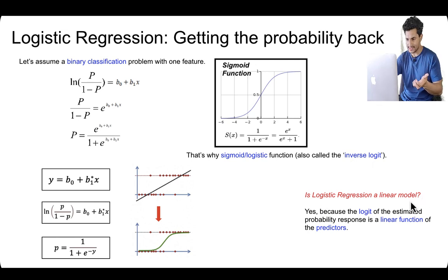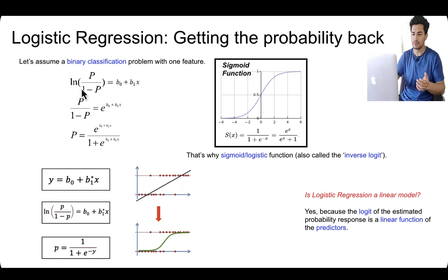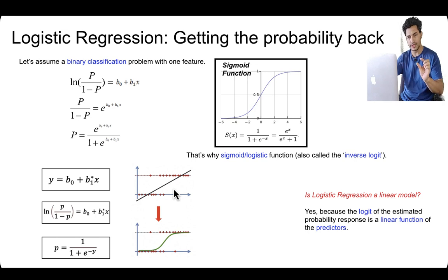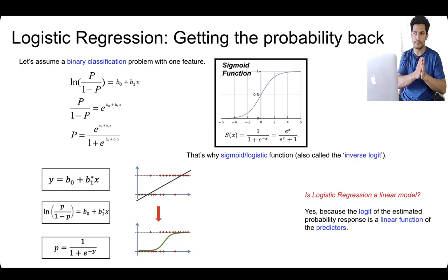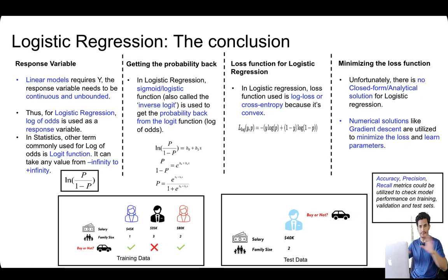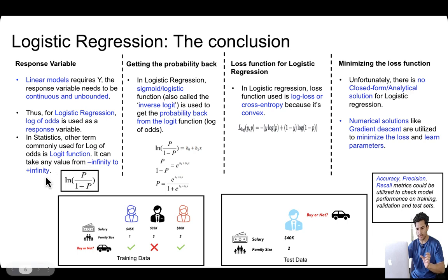Since sigmoid is used to get the probability back from the logit function, it's called the inverse logit. Is logistic regression a linear model? Yes — the features are regressed in a linear way to predict log of odds, and to get the probability back we apply the non-linearity (sigmoid). So only for getting probability back do we apply non-linearity; otherwise it's a linear model. Summing up: logistic regression uses log of odds (ranging from minus infinity to plus infinity) and sigmoid to convert log of odds back to probability.